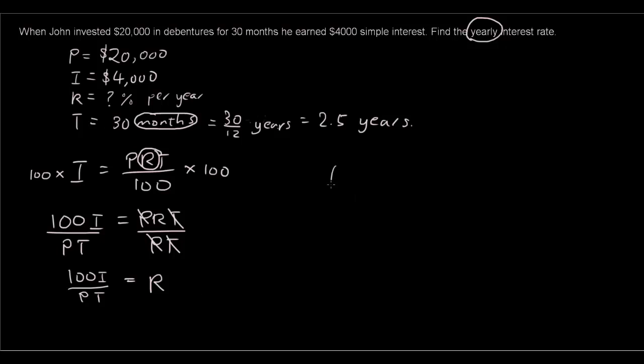Once we have rearranged that then we can substitute in the values we want into the equation. So actually let's use some different colors. So we got I is 4000. So 100I, 100 times 4000 divided by P is 20,000. So 20,000 times T is 30, sorry not 30, 2.5 years.